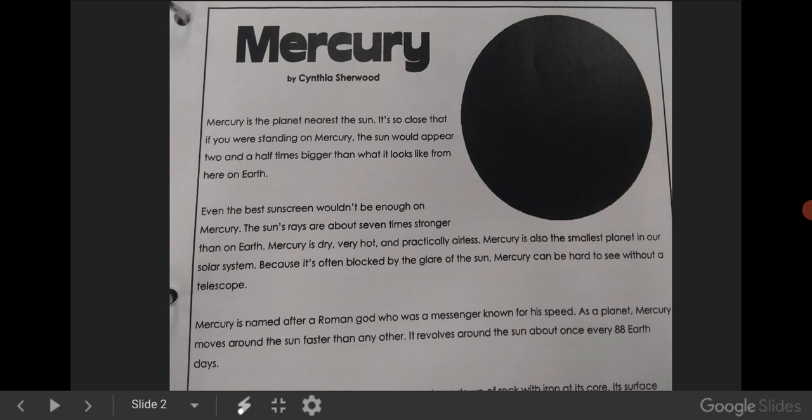Even the best sunscreen wouldn't be enough on Mercury. The Sun's rays are about seven times stronger than on Earth. Mercury is dry, very hot, and practically airless. Mercury is also the smallest planet in our solar system.